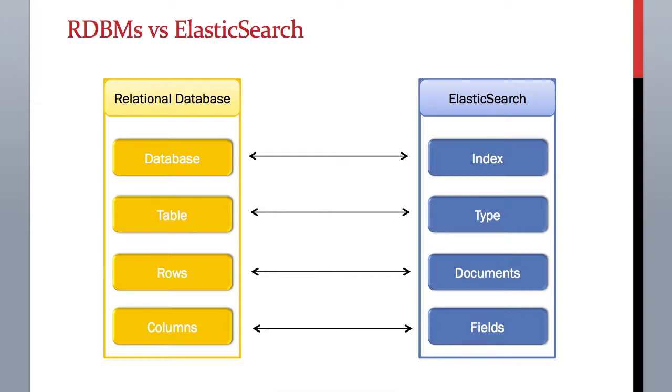Within a document in Elasticsearch, there can be any number of fields, just like there are columns in a record in an RDBMS table.